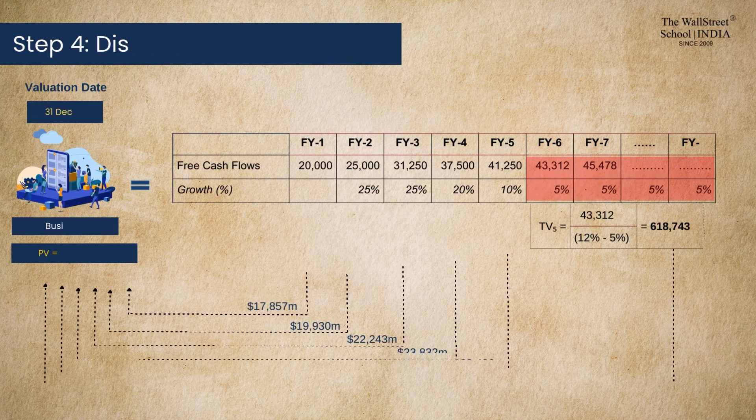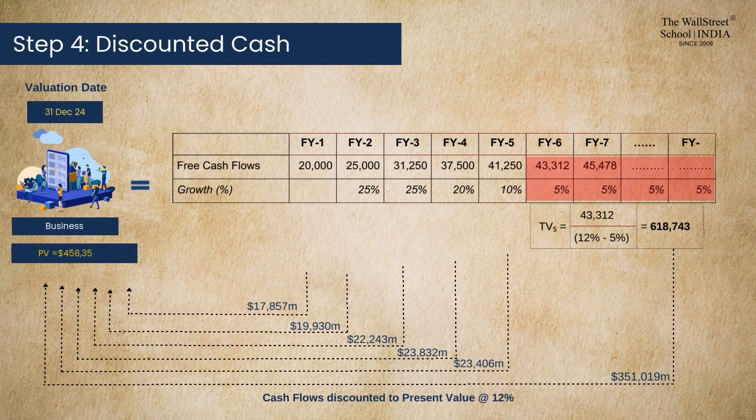Step four: discount these cash flows to present value, including terminal value. The cost of capital estimated in step two is used to discount the cash flows projected in step one, and the terminal value projected in step three.